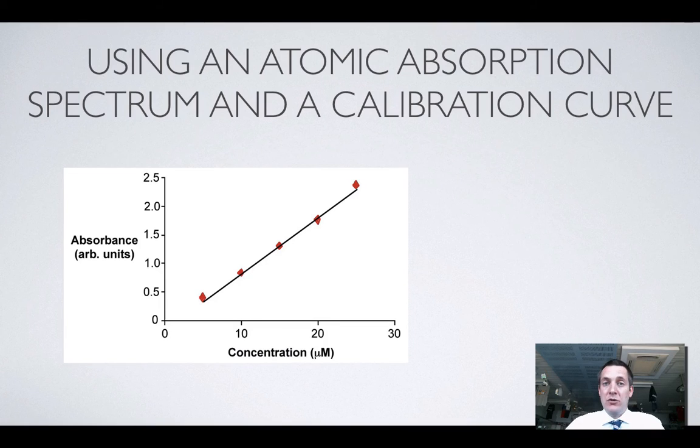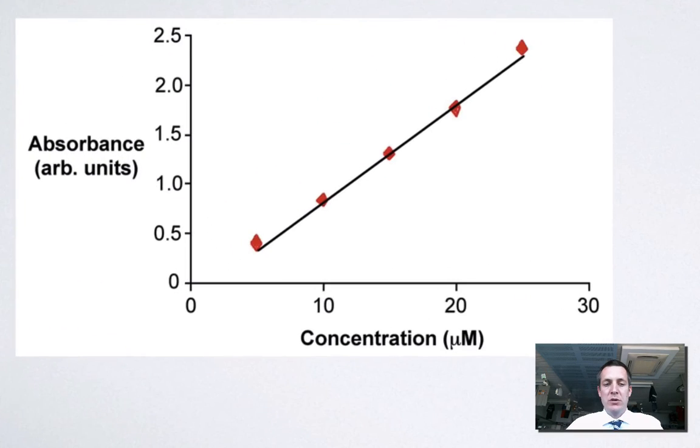Because this is often an unknown sample that we're dealing with, what we do is we use something called a calibration curve. We create a few different samples of known concentration. We might have a solution that contains lead or another heavy metal like cadmium which we don't want in our food or water supply, and we can maybe create a solution with a concentration of five micromolar, so five one millionth of a mole per liter.